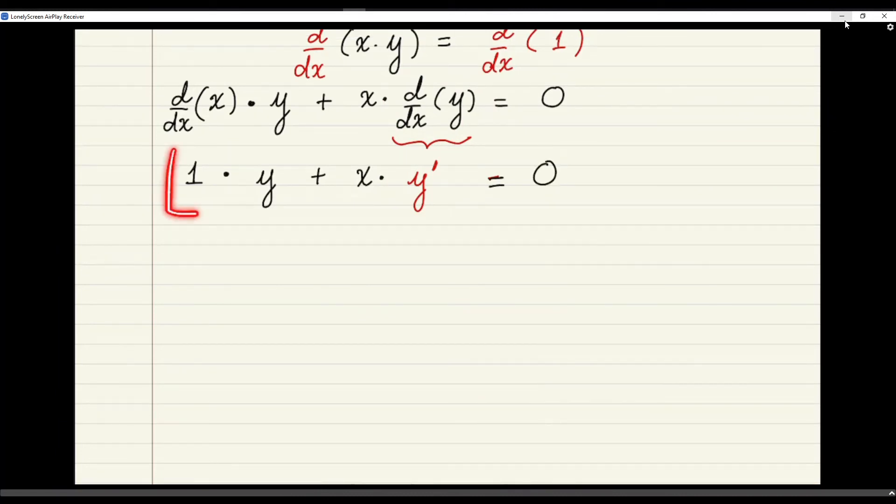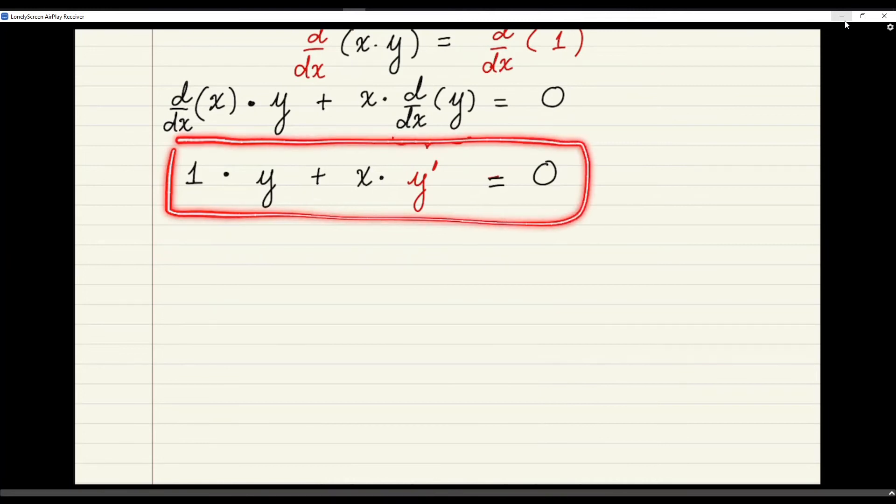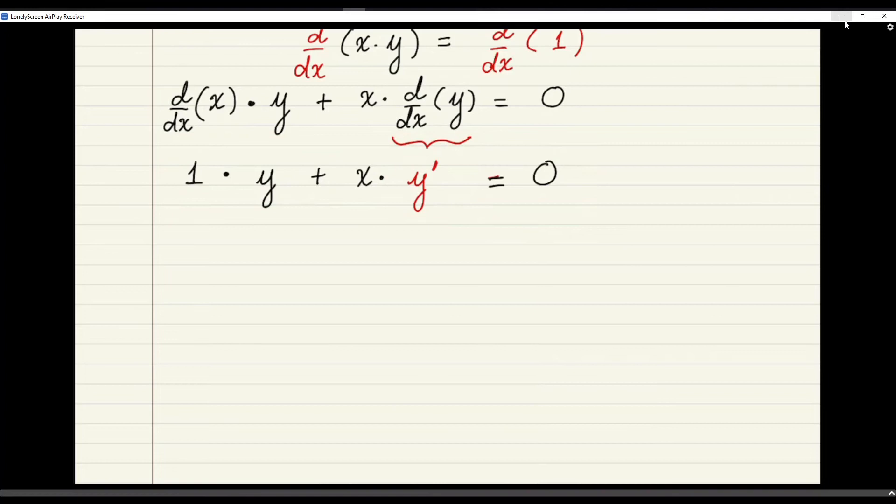So now I have an expression that has y prime in it, which is the thing that I am looking for. So I can solve this expression for y prime. Well, let's clean this up a little bit more. Because we have 1 times y is just y. So this will be y plus x times y prime equal to zero. And now I would like to solve for y prime which is the thing that we are looking for.